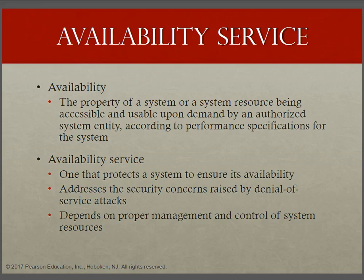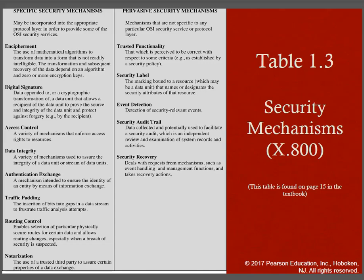The availability service protects a system to ensure its availability and addresses the security concern raised by denial-of-service attacks. When we discussed DoS attacks, the main issue affected is availability. Table 1.3 lists security mechanisms defined in X.800, divided into those implemented in a specific protocol layer such as TCP or an application layer.